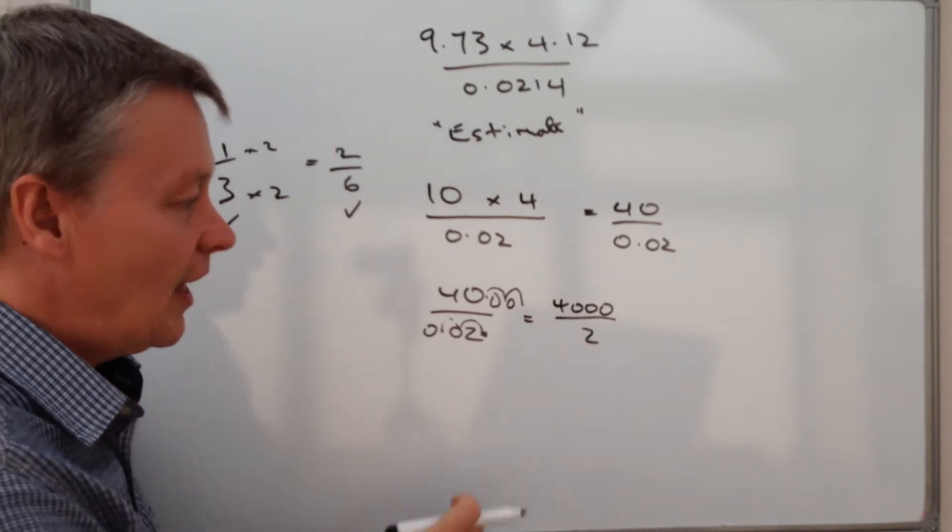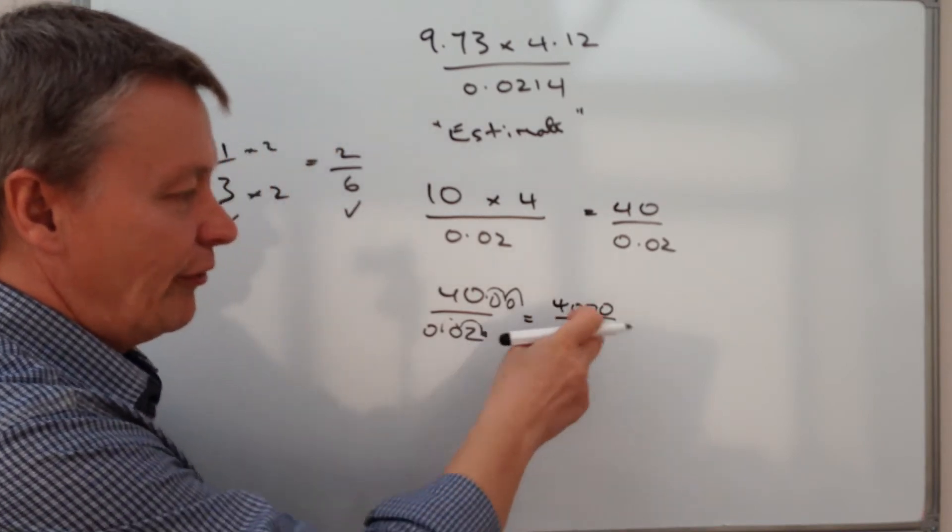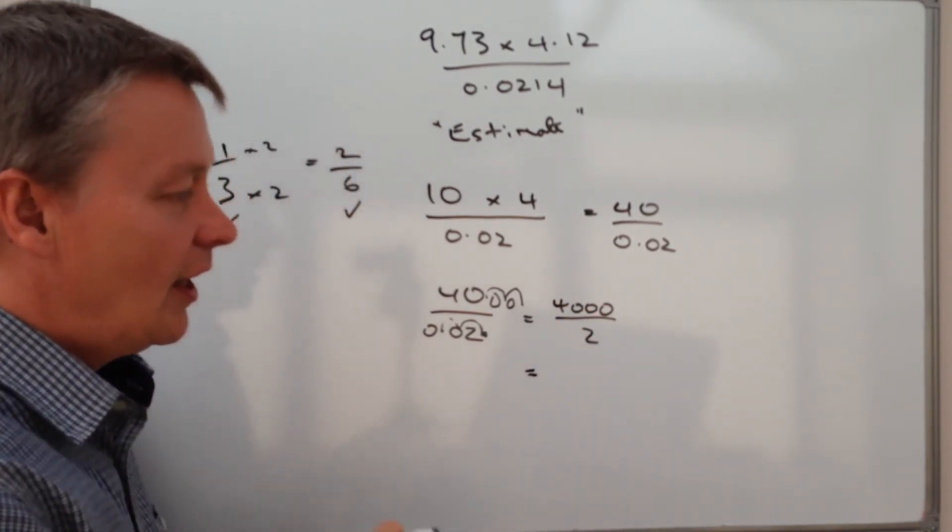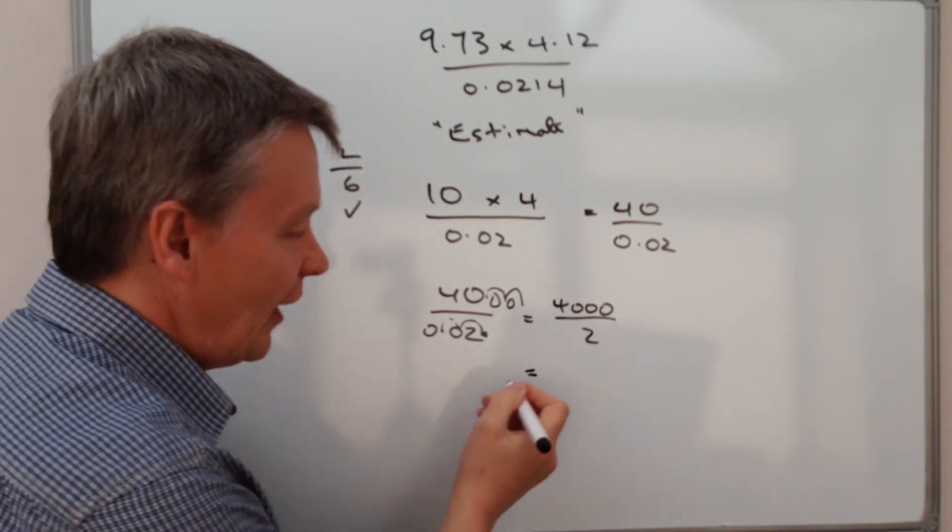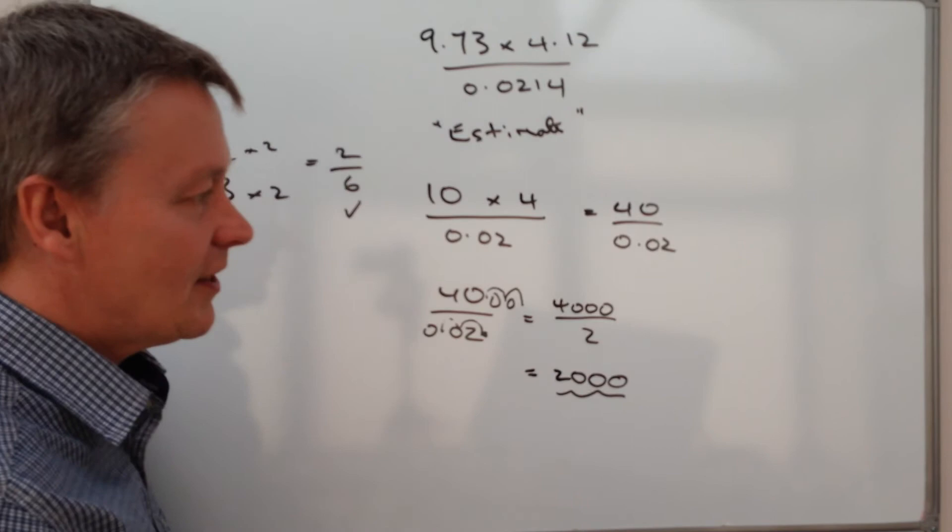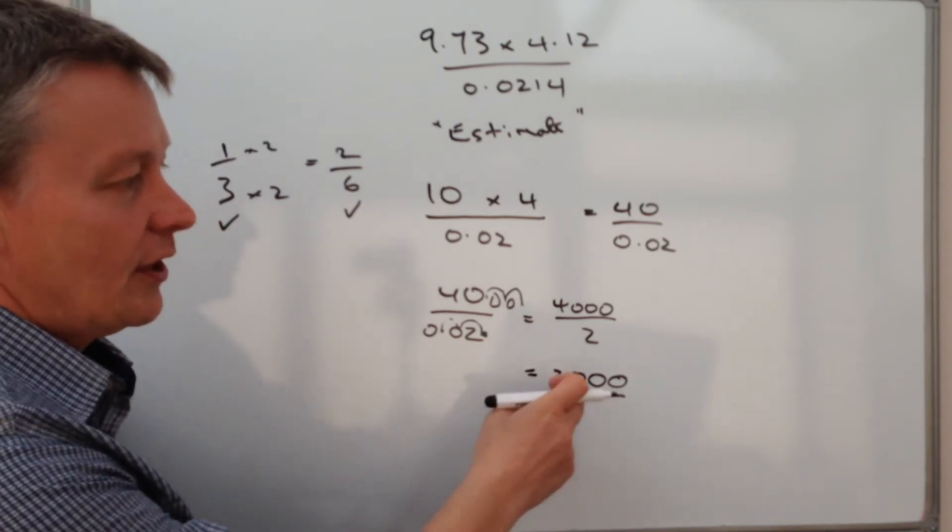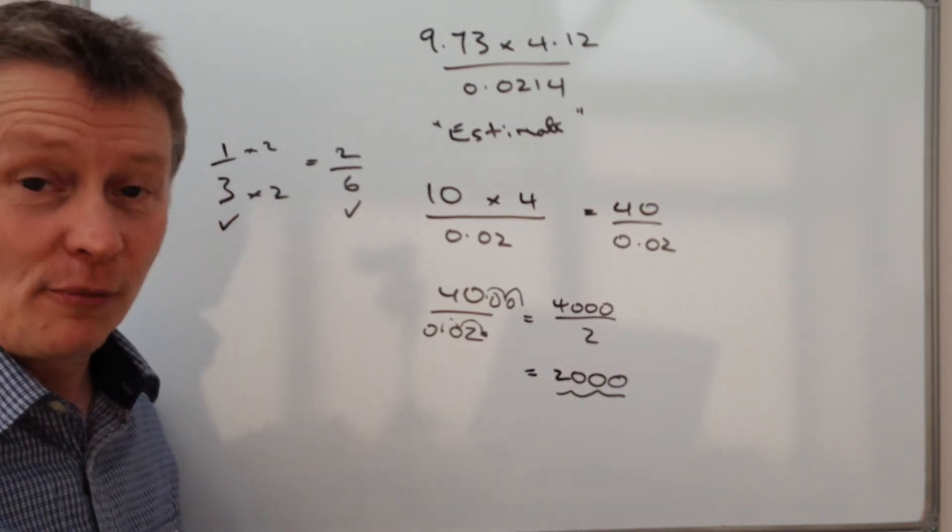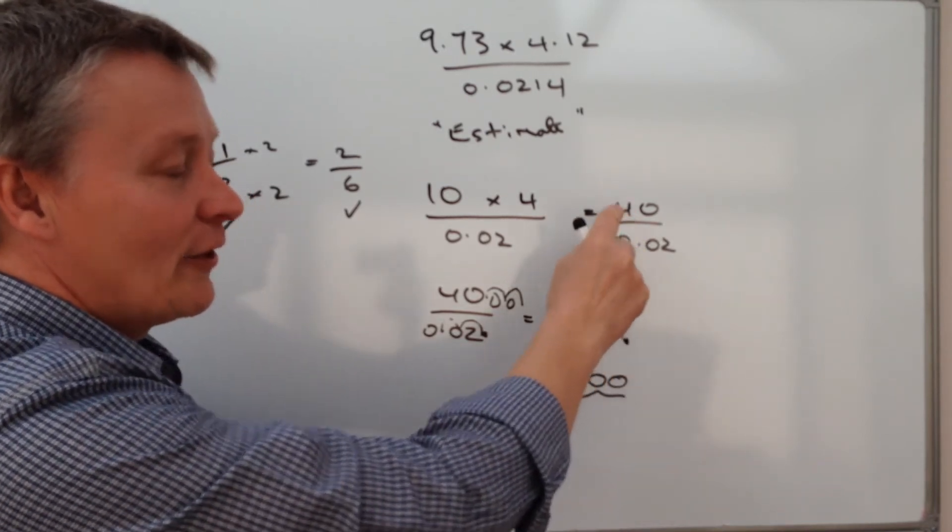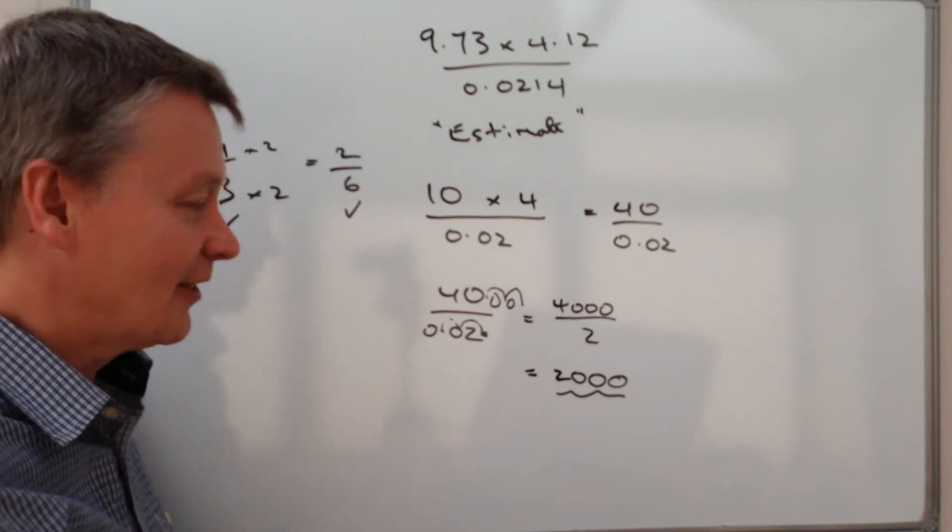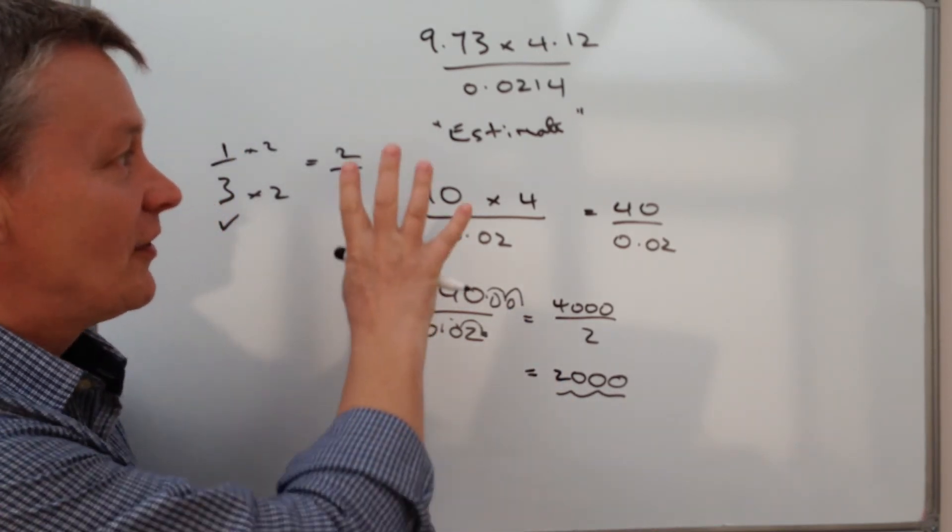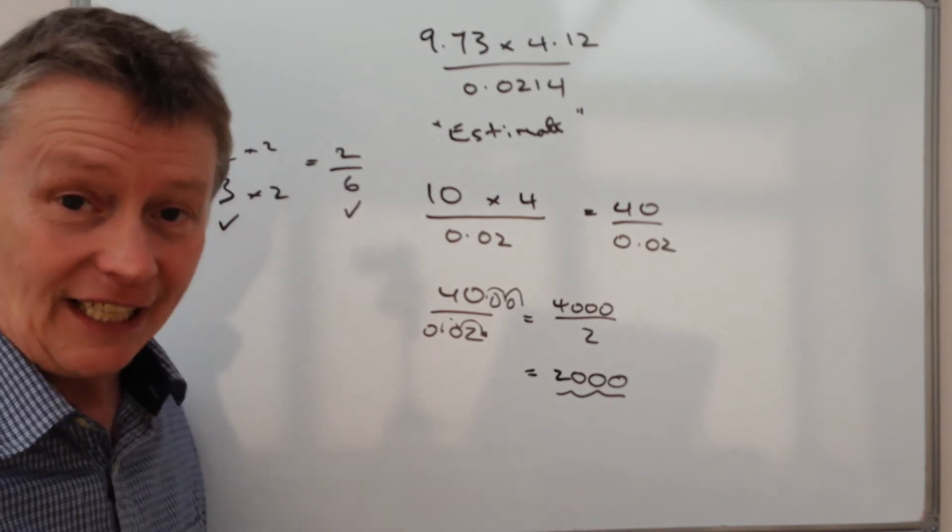So I'm in a position now where I can perform that calculation. 4,000 divided by 2. How many 2s are there in 4,000? Well, there's actually 2,000 of them. And that's the answer to this question, which is the same as 40 divided by 0.02. It's basically saying how many 0.02s are there in 40. Well, it's exactly the same as saying how many 2s are there in 4,000. So the answer to this particular estimation is 2,000.